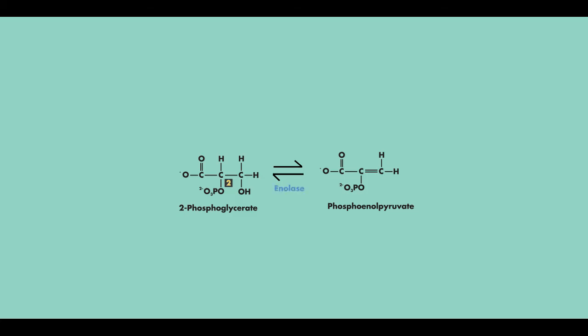Now this is easy to remember because both the enzyme and the product contain the word enol. In this step, water is also produced.